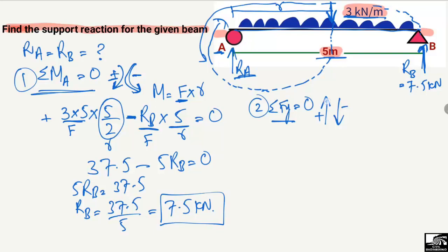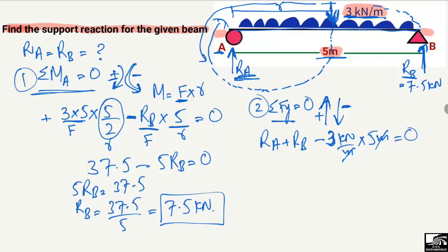All forces acting upward are taken as positive. There are two upward forces: R_A and R_B, so R_A plus R_B is positive. The load of 3 kilonewton per meter is acting downward, so it is taken as negative: minus 3 kilonewton per meter multiplied by 5 meters gives minus 15 kilonewton. Setting the summation equal to zero: R_A + R_B − 3 × 5 = 0.